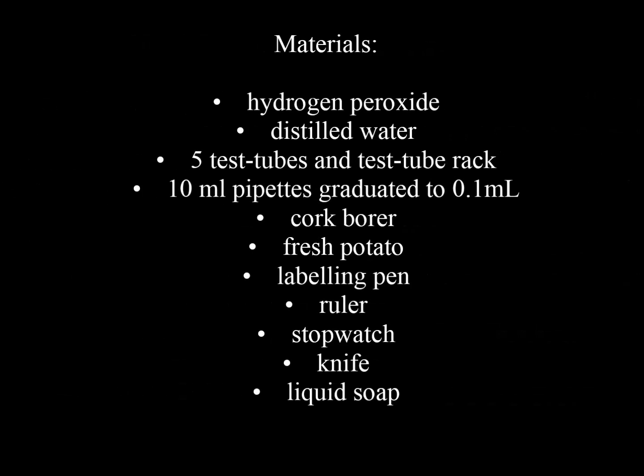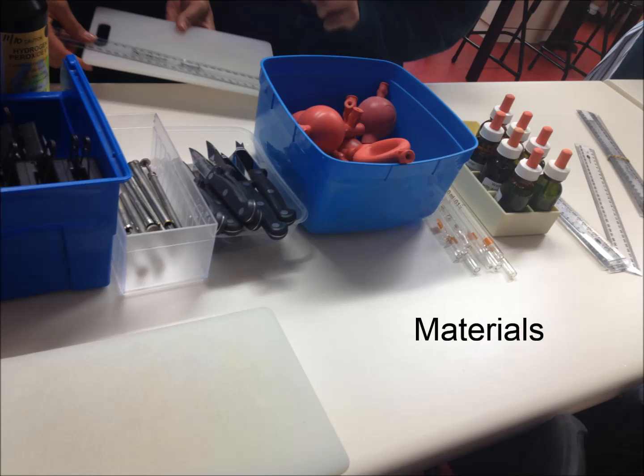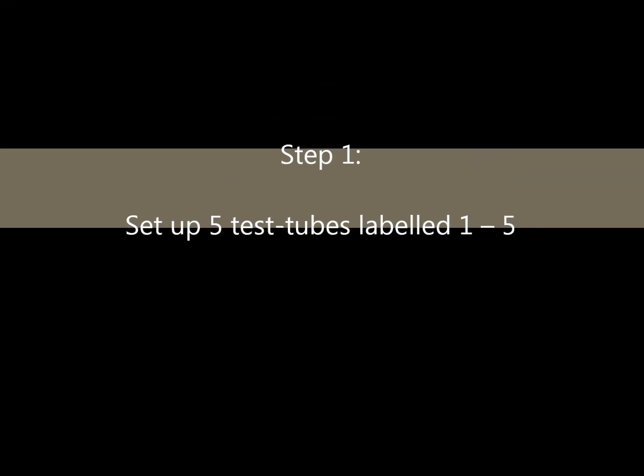Materials needed for this experiment include hydrogen peroxide, distilled water, five test tubes, a test tube rack, a 10 milliliter pipette, cork borer, fresh potato, labeling pen, ruler, stopwatch, knife, and liquid soap.